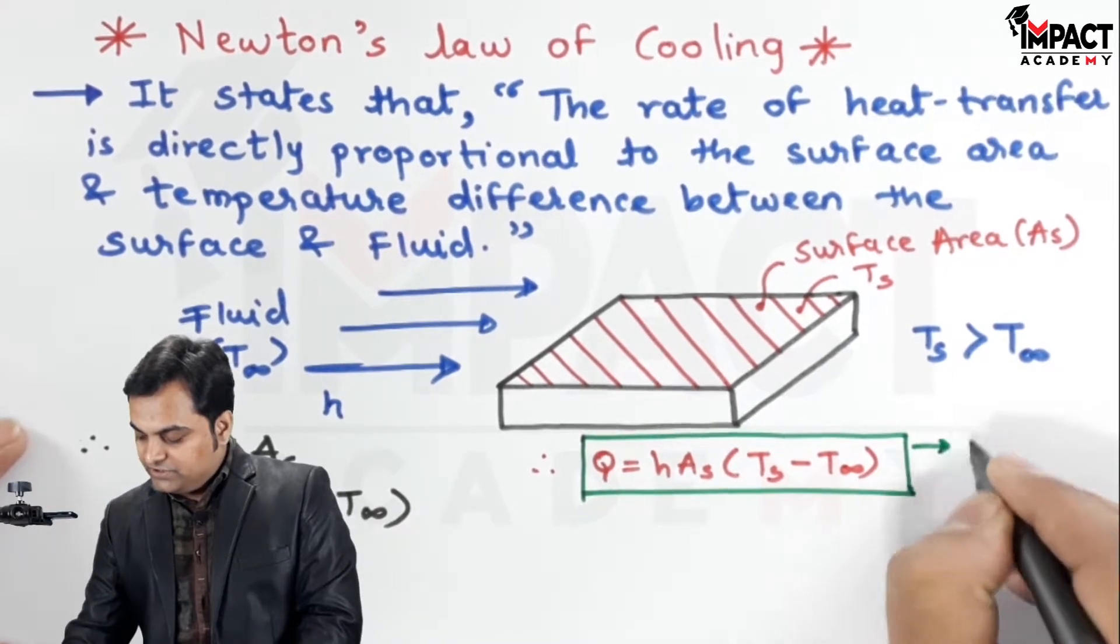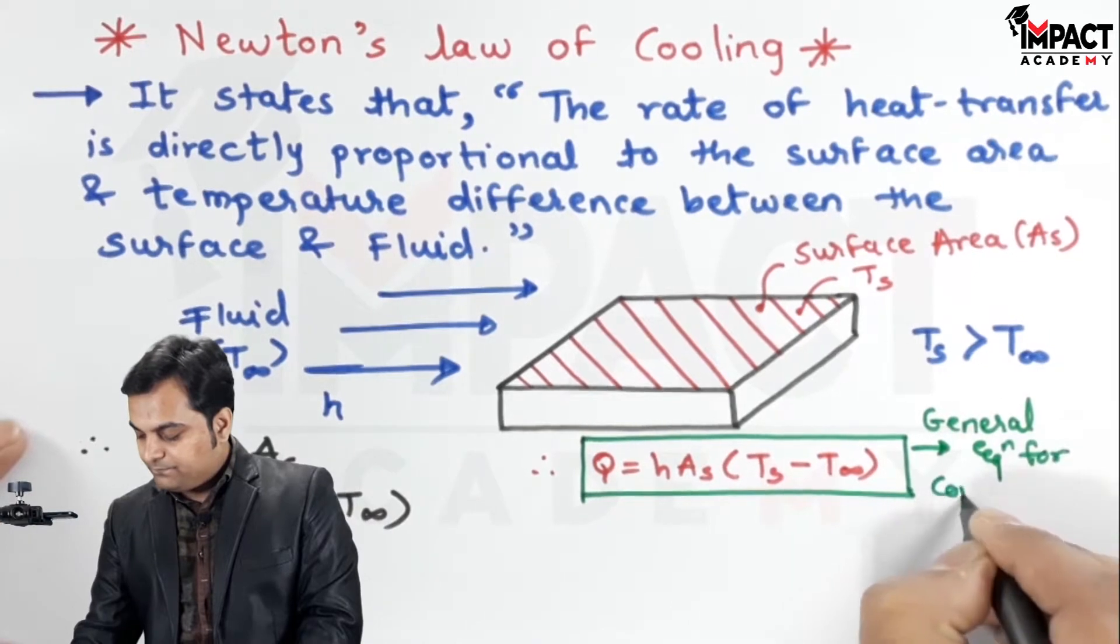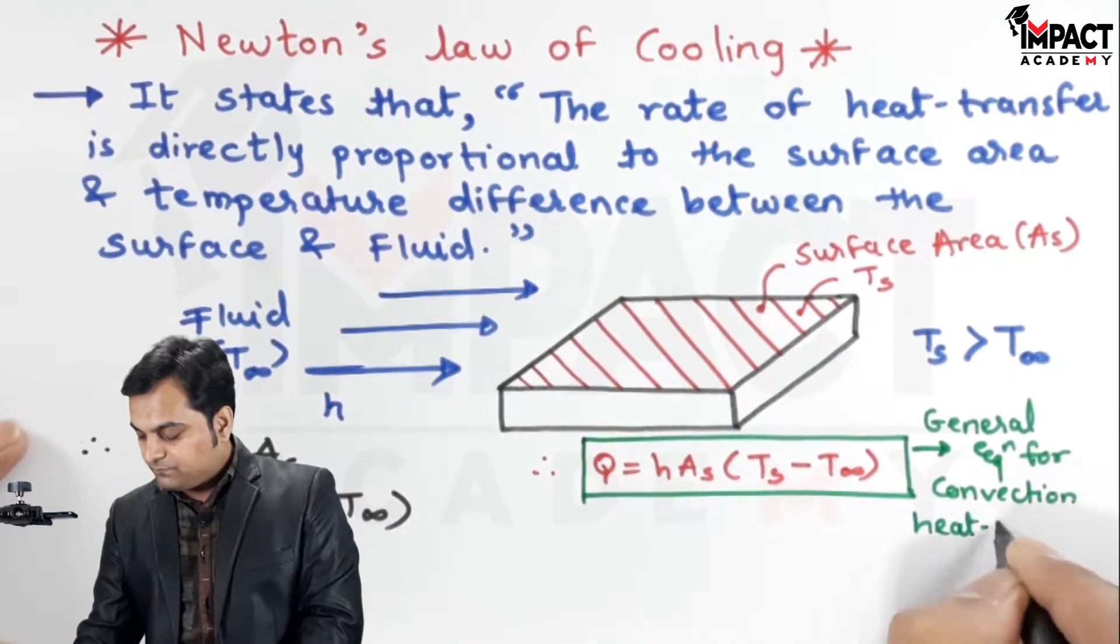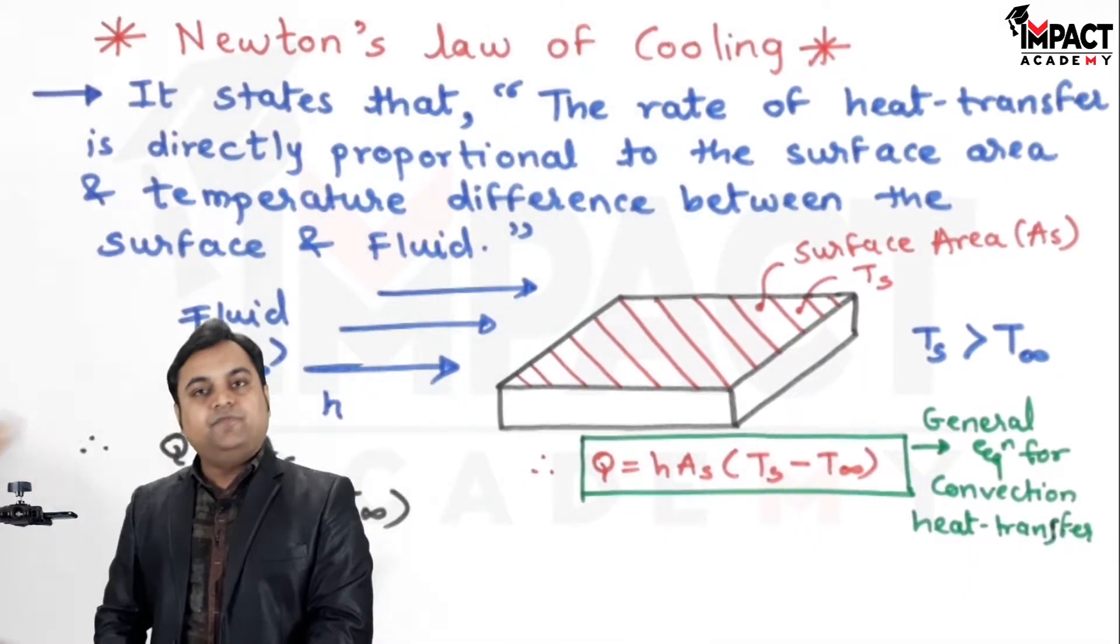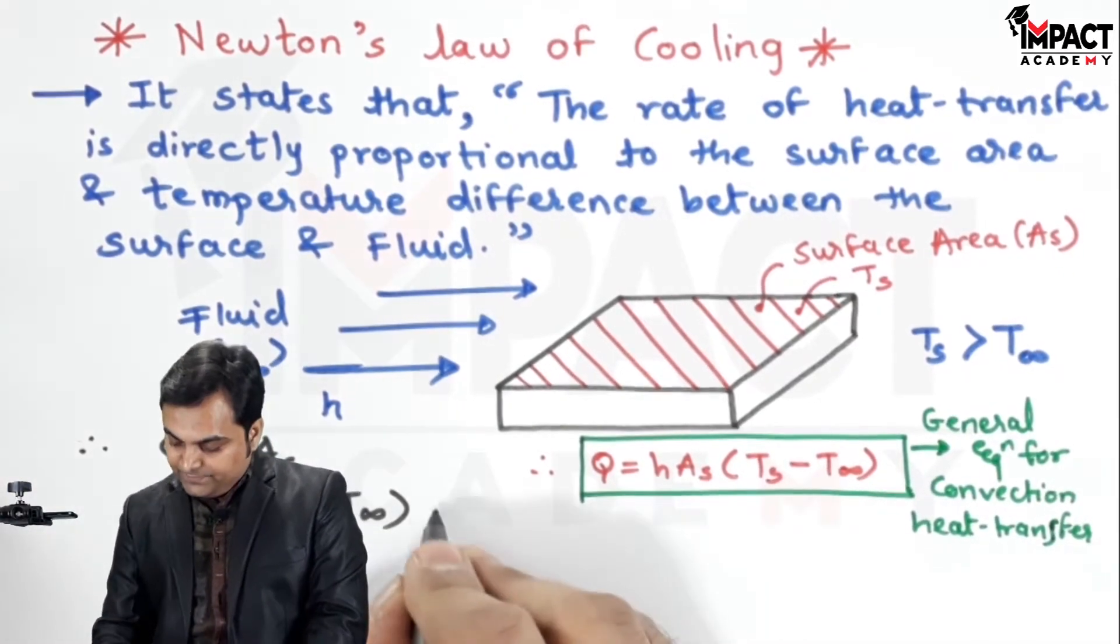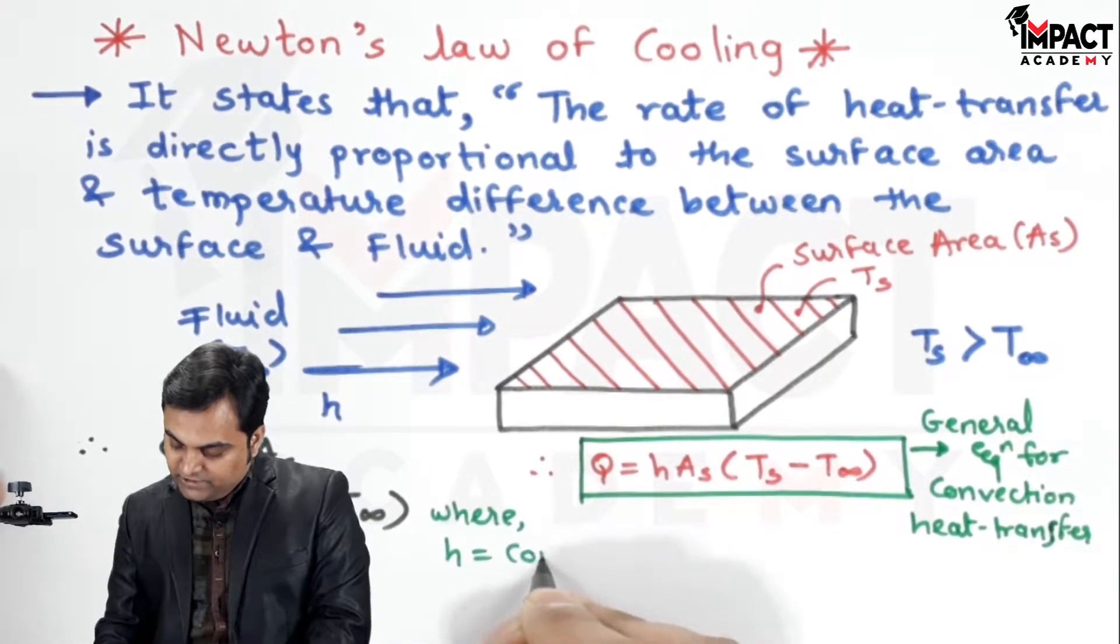So this equation is the general equation for convection heat transfer where H is called as the convection heat transfer coefficient.